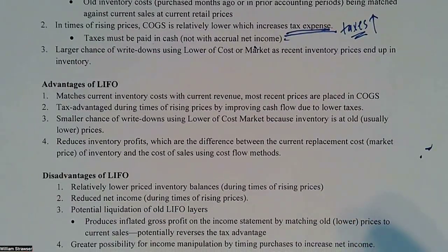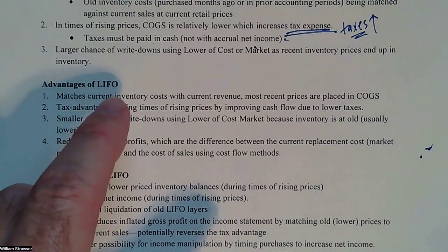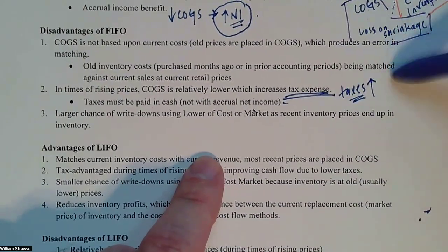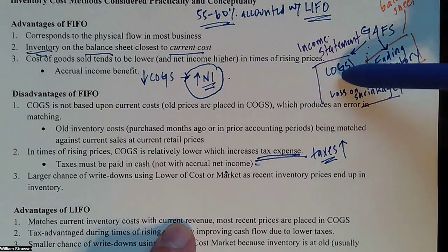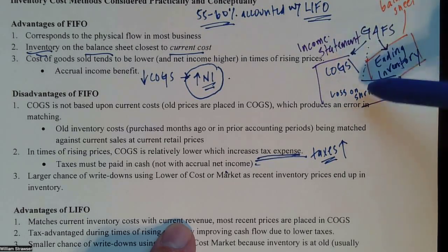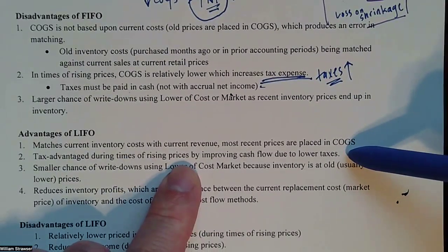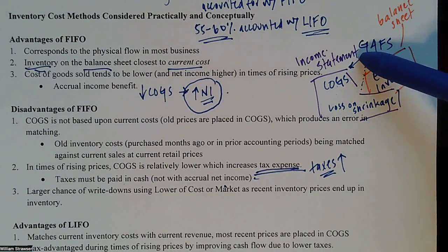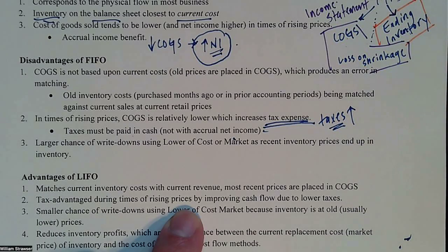Advantages of LIFO — these are pretty mirror image: if it's a disadvantage of FIFO, then it's an advantage of LIFO. LIFO matches current inventory costs with current revenue, so we don't have that error in matching. LIFO says this is a recent inventory cost going into cost of goods sold — last in, first out — so those recent inventory costs are on the income statement matched against sales revenue recorded this period. It's also tax-advantaged compared to FIFO because we're putting the most recent higher-priced items into cost of goods sold, giving more deduction and resulting in lower taxes paid.